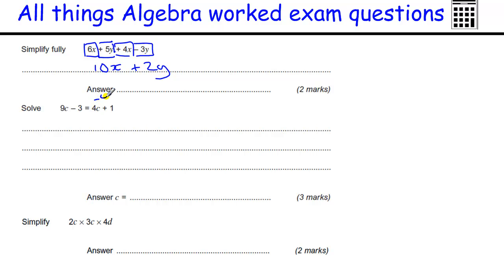Solve this equation. Take away the 4C to get 5C minus 3 equals 1. Add 3 to get 5C equals 4, and divide by the 5 to get C equals 4 fifths, which is the same as 0.8. Either answer is fine.